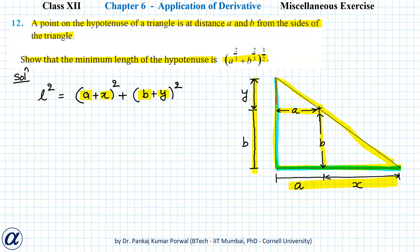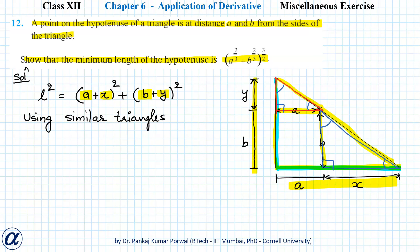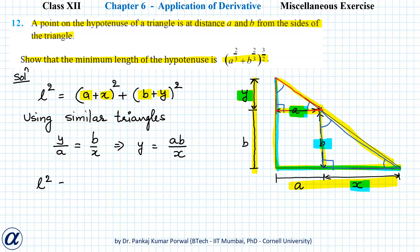To do that, let's consider the smaller triangle and the larger triangle. In these two triangles, this angle equals this angle because they are corresponding angles, this right angle equals this right angle, and this angle will also equal this angle. So the red triangle and the blue triangle are similar triangles, and using properties of similar triangles we can write y/a = b/x, which gives y = ab/x. So I get L² = (a + x)² + (b + ab/x)².